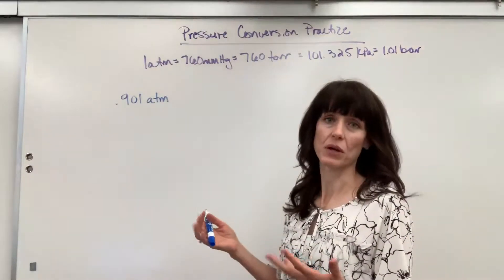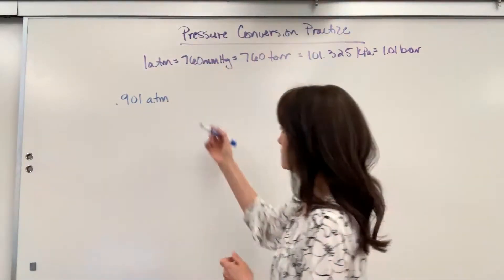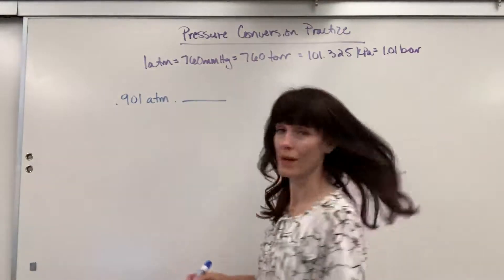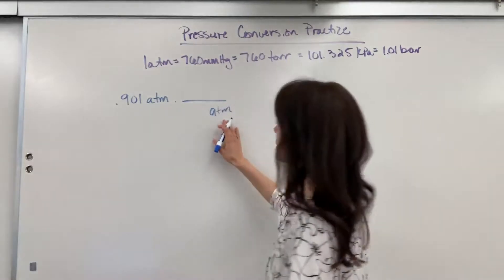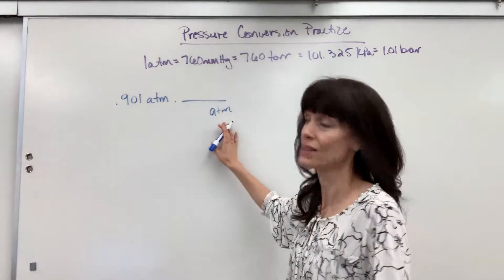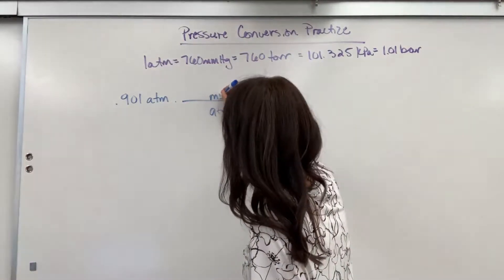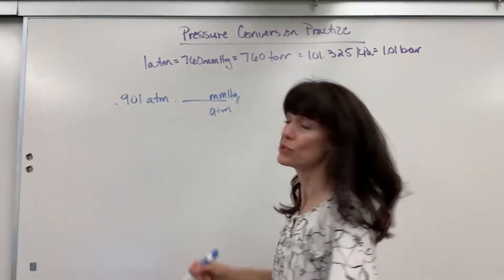So let's say that we have to go from atm to the millimeters of mercury. Okay, I want to get rid of atm, and I want to end with millimeters of mercury. So I put atm in the denominator, so it will cancel. What I want is millimeters of mercury, so it goes in the numerator.